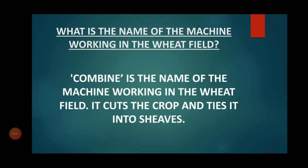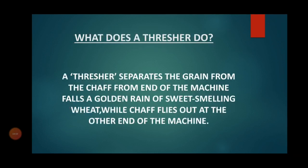What is the name of the machine working in the wheat field? 'Combine' is the name of the machine working in the wheat field. It cuts the crops and ties them into sheaves in different bunches. What does a thresher do? A thresher separates the grain, and from one end of the machine falls a golden rain of sweet-smelling wheat, while the chaff flies out at the other end.